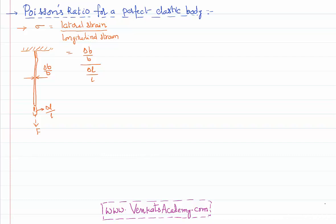We want to calculate the value of Poisson's ratio for a perfect elastic body. So we need to know what we mean by a perfect elastic body. Let us try understanding that first.